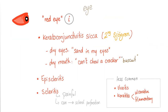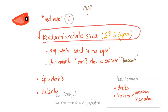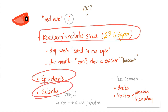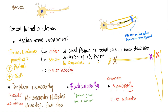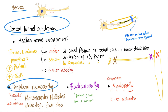For the eyes, you can get keratoconjunctivitis sicca — which is secondary Sjögren's syndrome — episcleritis, and scleritis. Note that uveitis is not common in rheumatoid; it is common in other diseases. Nerve problems in rheumatoid include carpal tunnel syndrome and peripheral neuropathy, including mononeuritis multiplex.